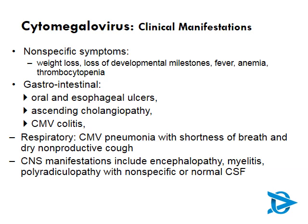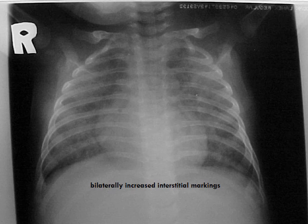Be very alert in someone presenting with a paresis with a suggestive picture of Cauda Equina Syndrome — keep CMV in mind in somebody with HIV and a low CD4 count, as it's potentially reversible if treatment is started early. This X-ray of CMV pneumonia of the lungs shows generalized features of bilateral increased interstitial markings, very difficult to differentiate from PJP.